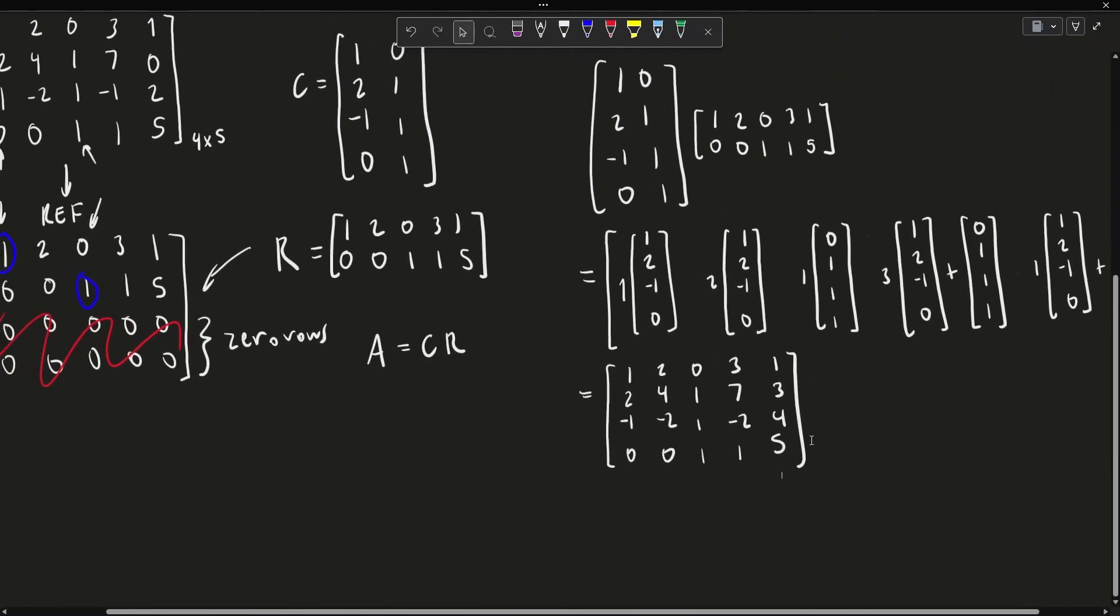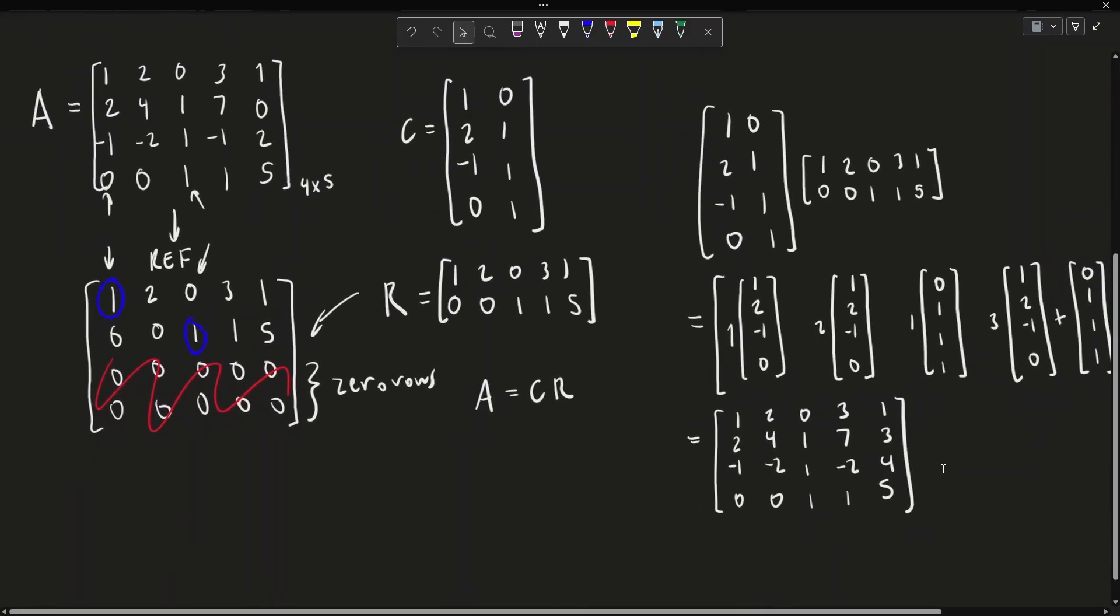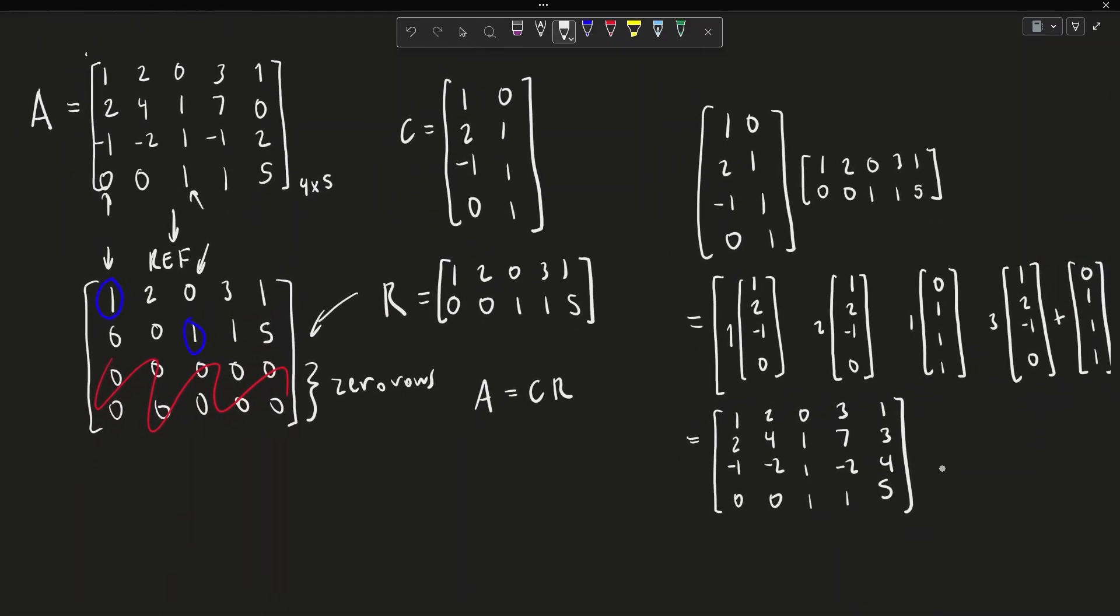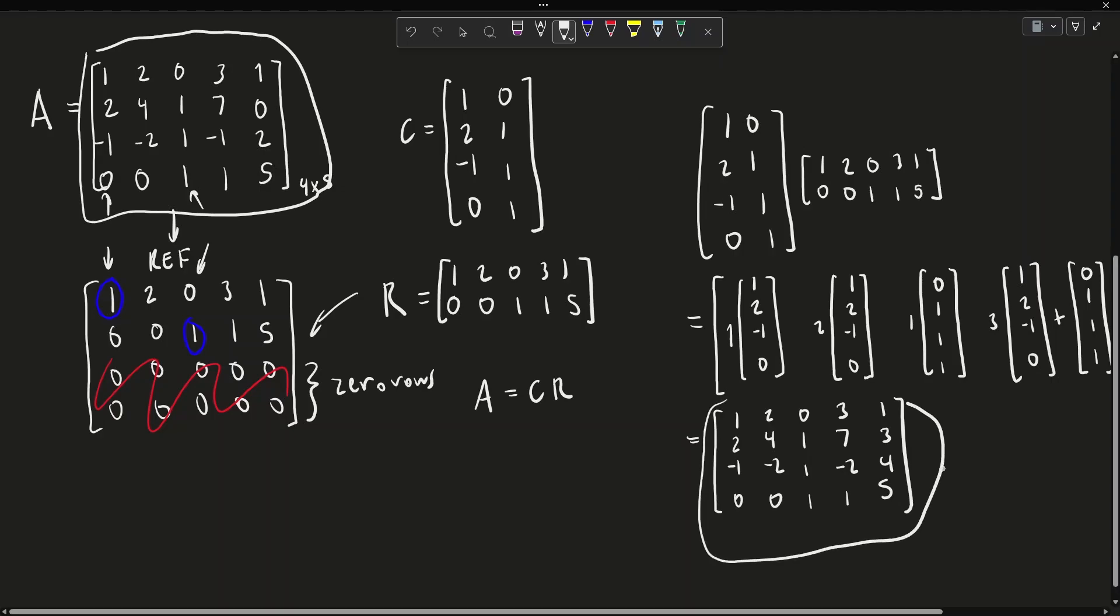Now if we compare this to our original matrix A, we find that this matrix is indeed equal to our matrices C and R multiplied by one another.